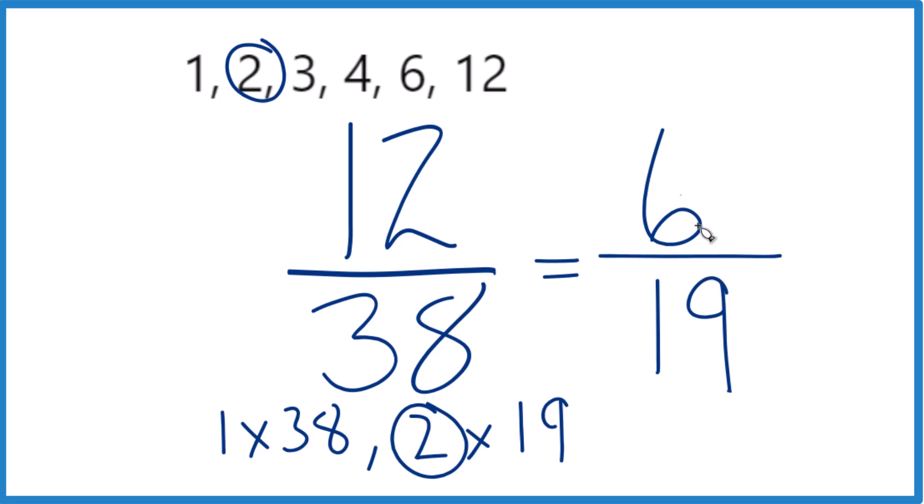We can't simplify this any further. So when we simplify or reduce the fraction 12 over 38, we end up with 6 19ths.